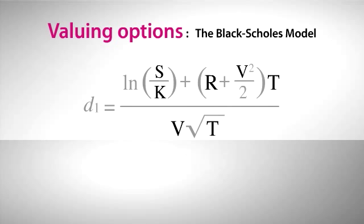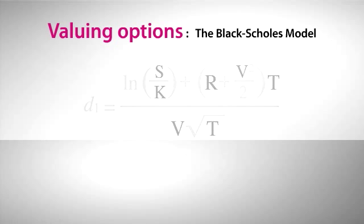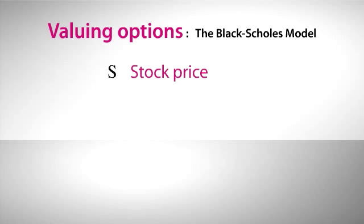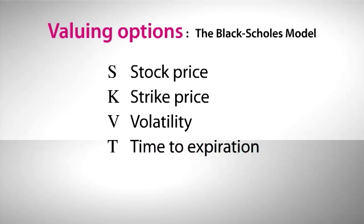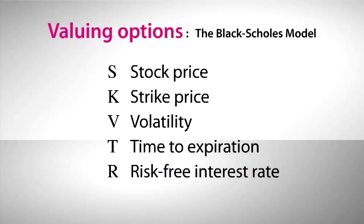But the essence of the Black-Scholes model really relies on only five different variables. These include the price of the stock, the strike price of the option, annualized volatility, time left to expiration, and the risk-free interest rate, such as the yield for treasury notes.